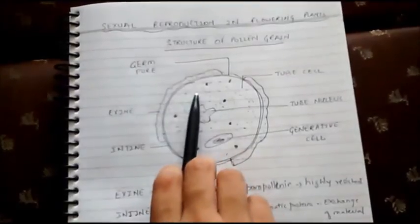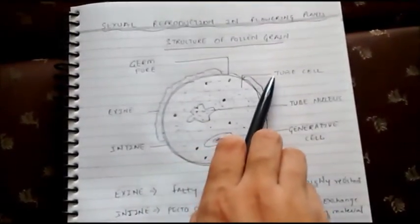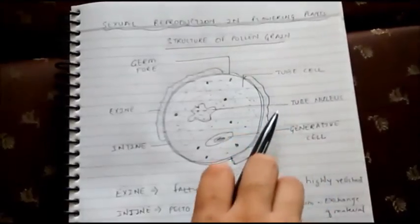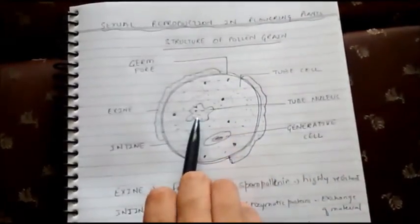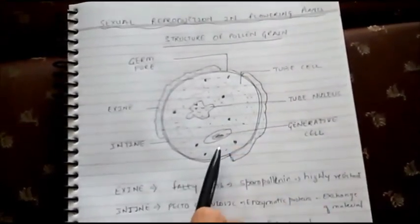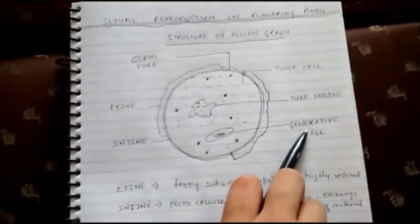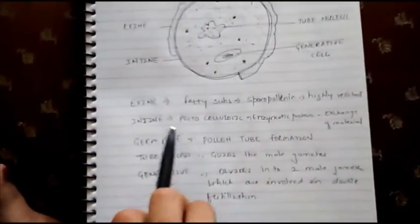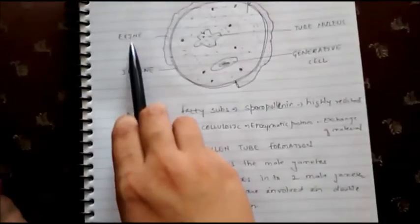The most space is taken by tube cell, which contains tube nucleus and generative cell.